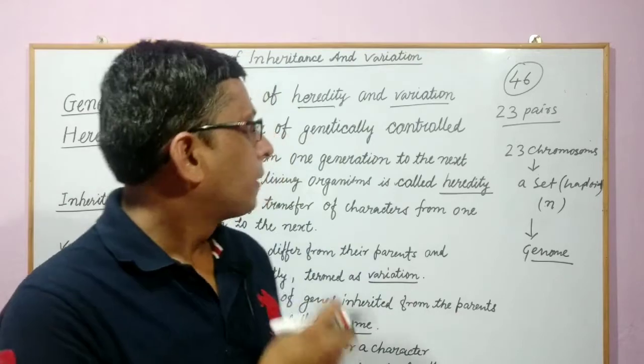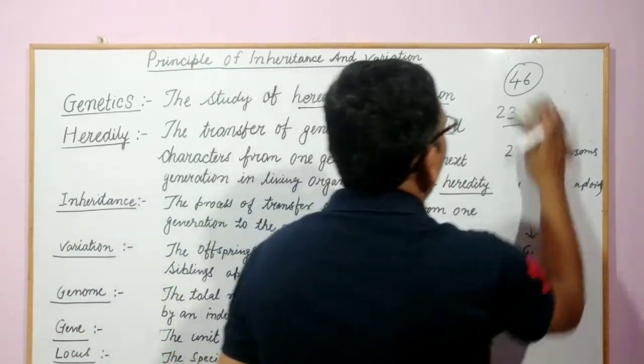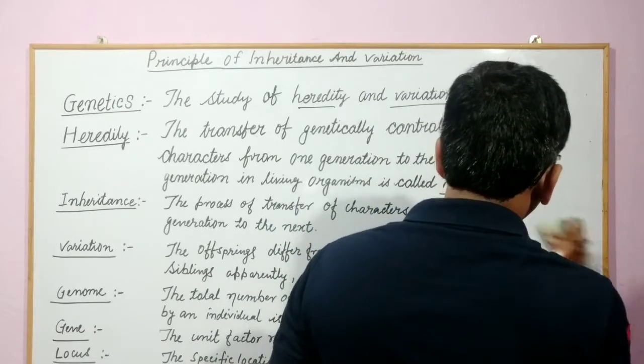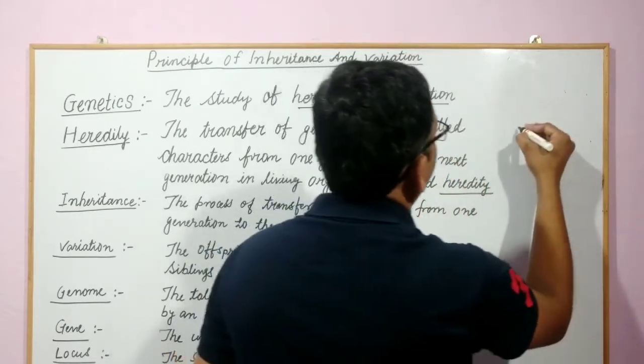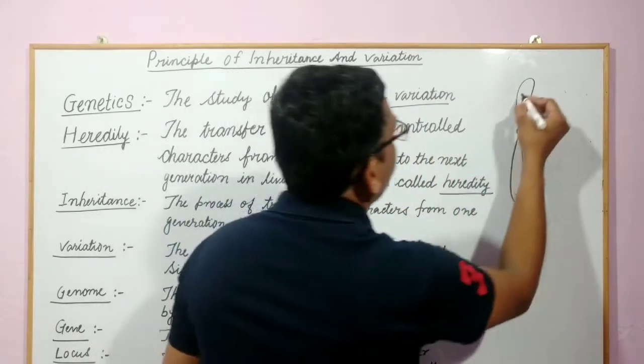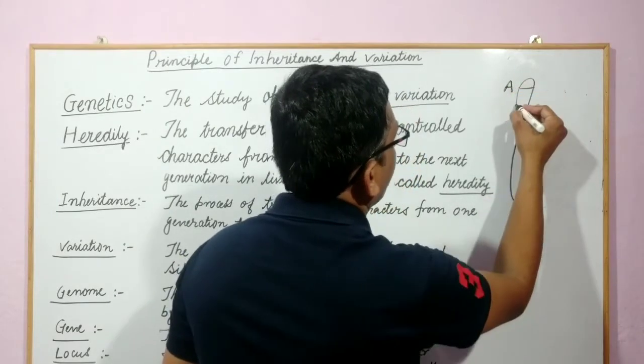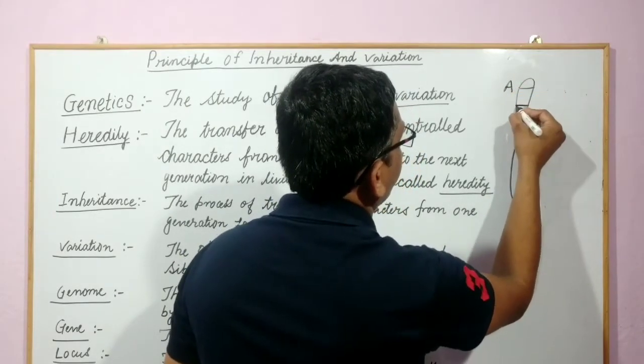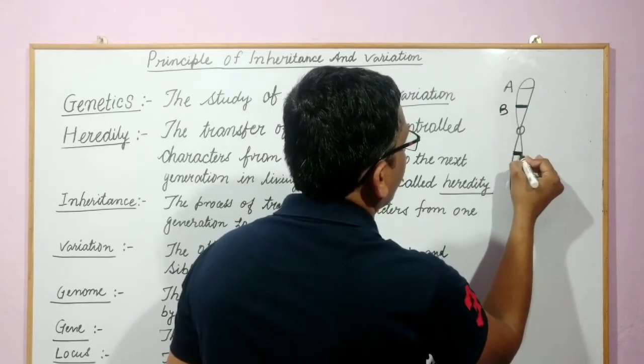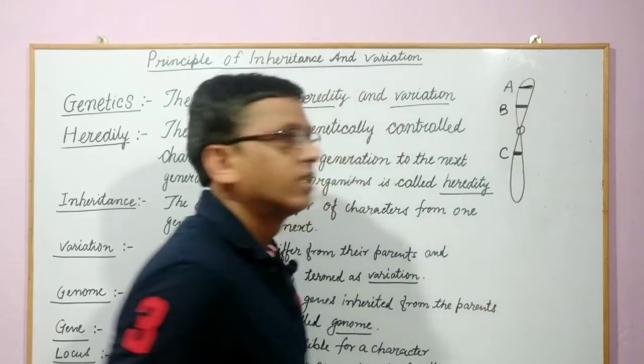We can understand this by a drawing here. Let us draw a chromosome and locate a gene. Suppose there is a chromosome. And we have a gene over here called gene A. Another gene over here which is called gene B. Another gene here is called gene C.